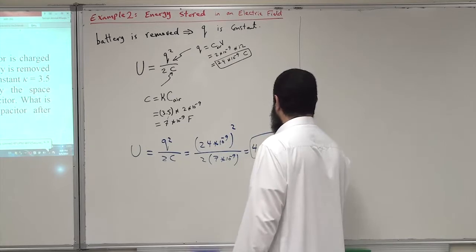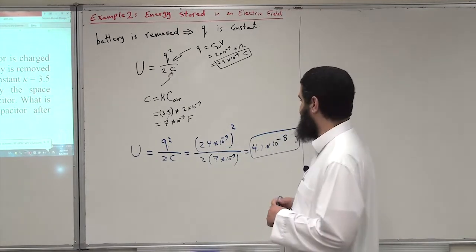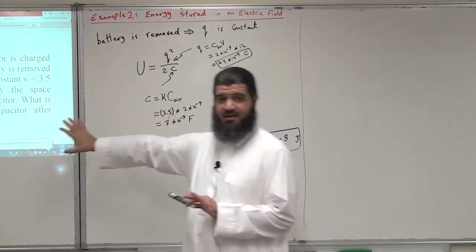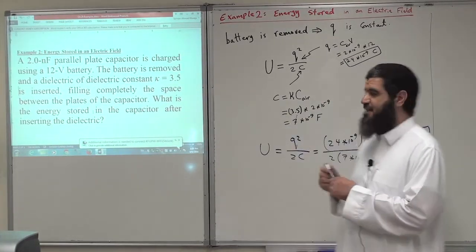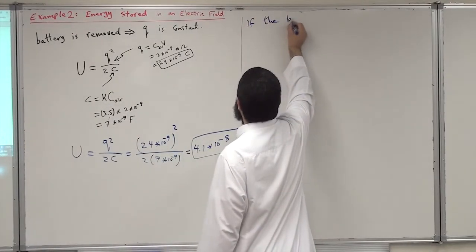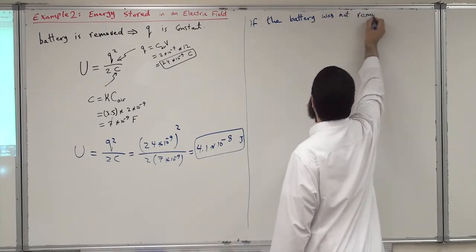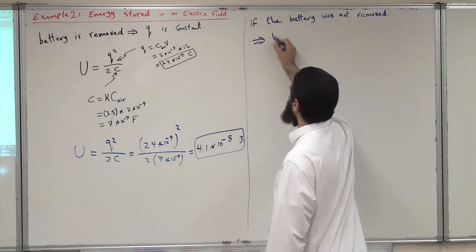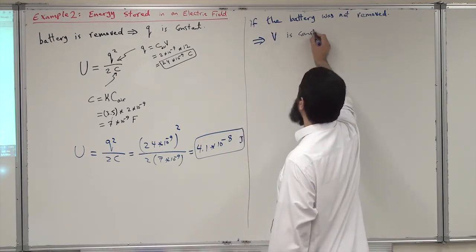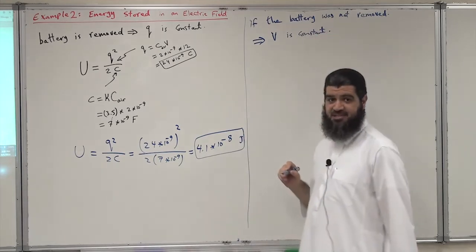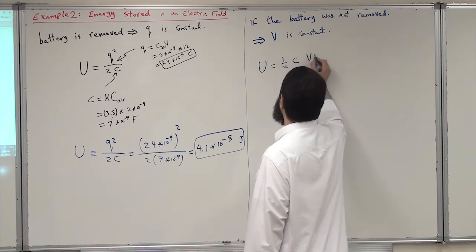Now let us modify the problem slightly. Let us assume the battery was not removed — it is kept there. This implies that V, the potential across the capacitor, is constant at 12 volts, while the charge will be changing. How much is the energy stored in that case? So U equals one half C V squared.